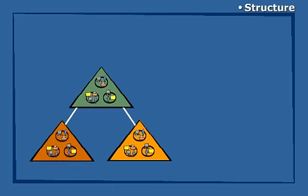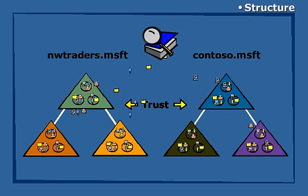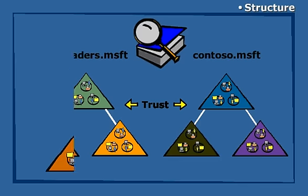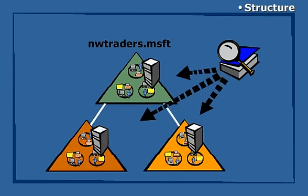The global catalog holds all the objects for all domains, so it's easy for users to locate a specific object anywhere in the enterprise. To keep query response times fast, the global catalog maintains only a subset of attributes for each object. The global catalog is automatically replicated to those domain controllers throughout a forest that are designated as global catalog servers.